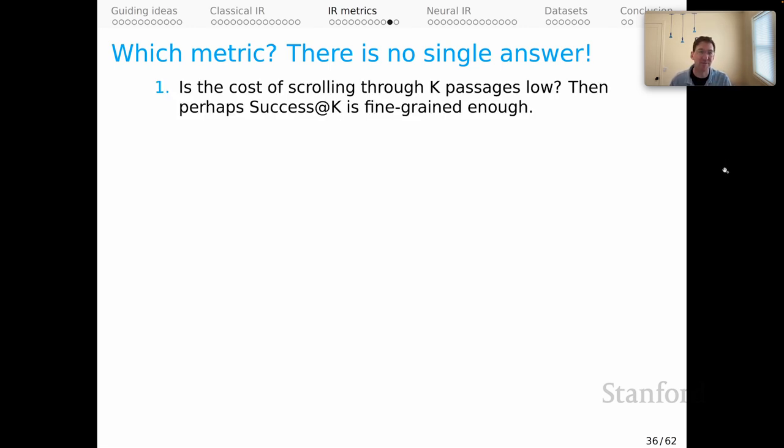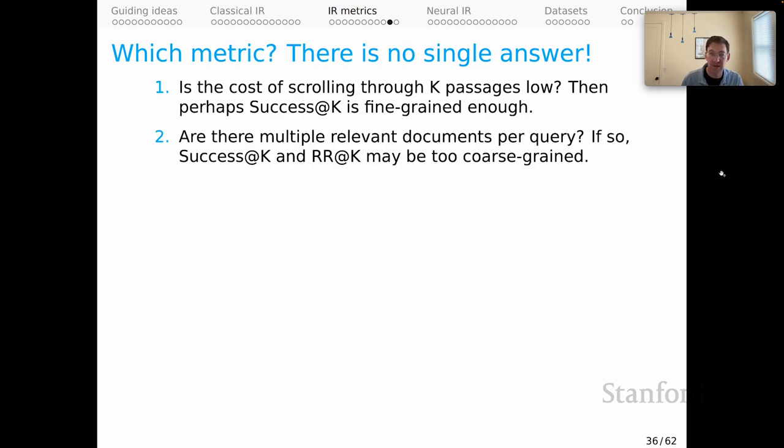For you, is the cost of scrolling through k passages low for your users, or for you? Then maybe success at k is fine-grained enough because all you need to do is find a relevant one in that set of k documents.